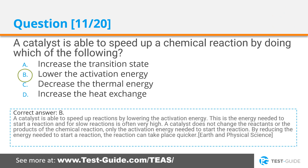Correct answer B. A catalyst is able to speed up reactions by lowering the activation energy. This is the energy needed to start a reaction, and for slow reactions is often very high. A catalyst does not change the reactants or the products of the chemical reaction, only the activation energy needed to start the reaction. By reducing the energy needed to start a reaction, the reaction can take place quicker.